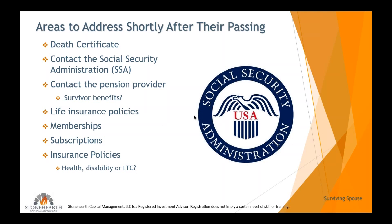Call life insurance policy providers. Hopefully you've got a file somewhere that shows where the life insurance policies are and the telephone numbers. That's usually a pretty quick process, and life insurance is known for getting beneficiaries their money rather quickly. They usually set up some sort of checking account and send you check books, or they'll just cut you a check. You'll need to send them a copy of the death certificate.